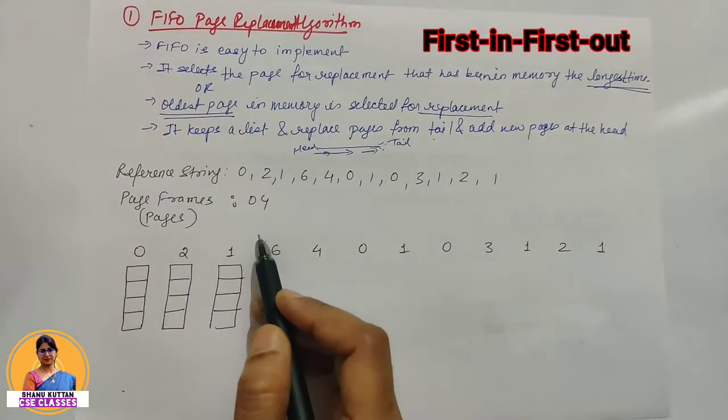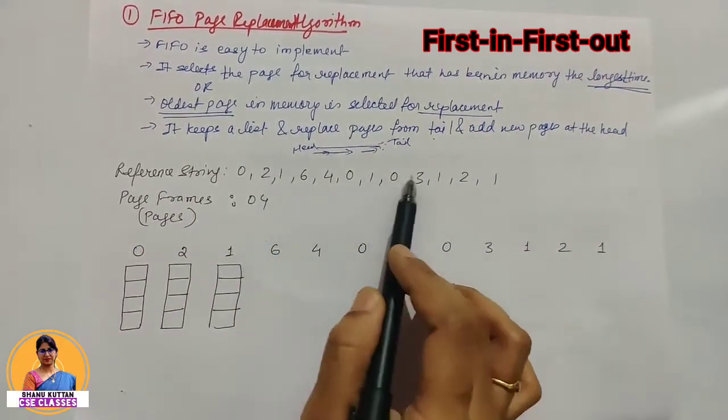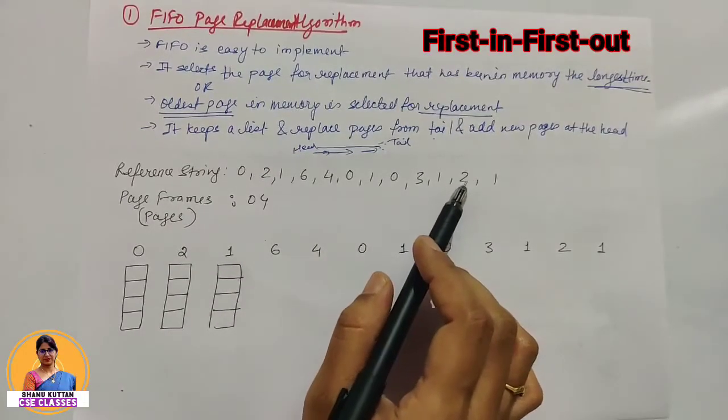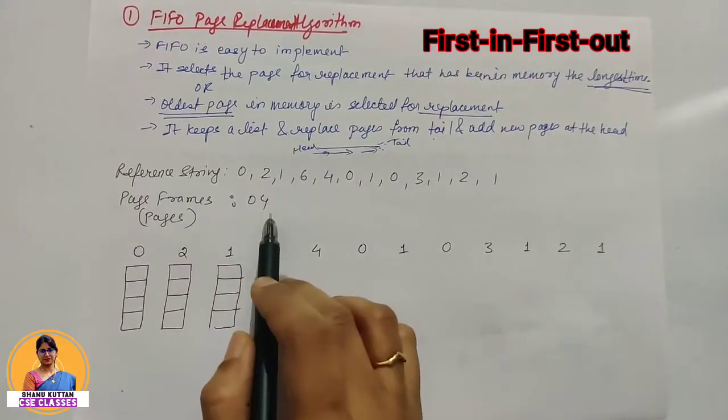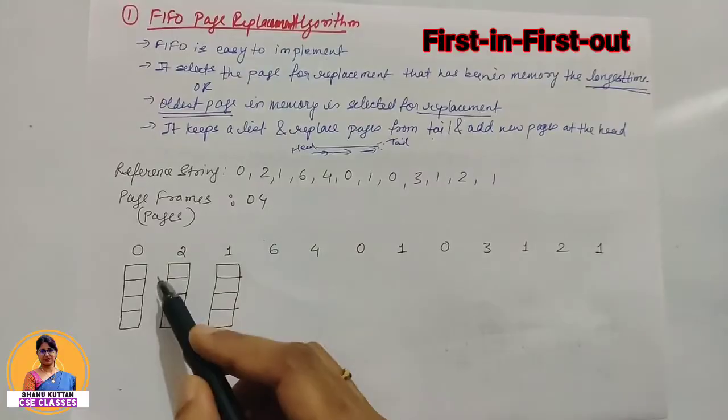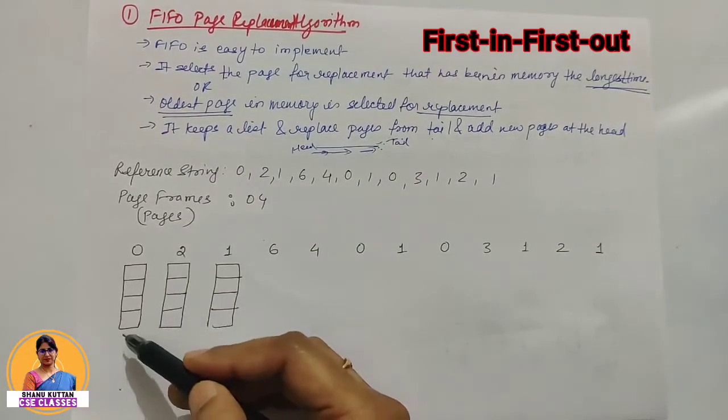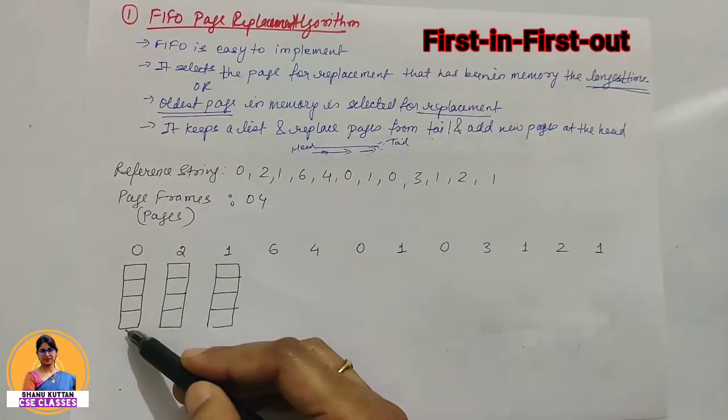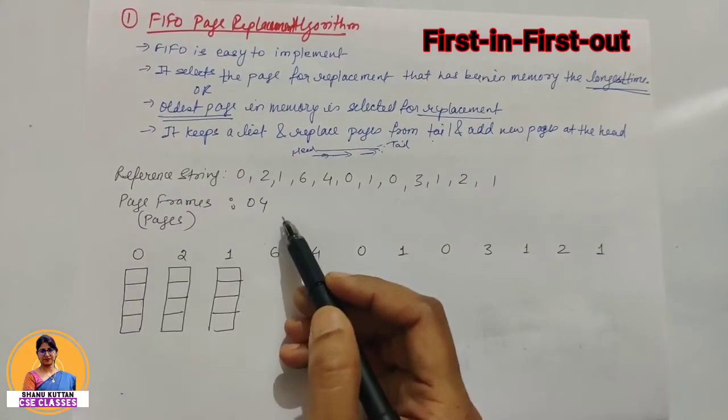Let's take a look at this example. Suppose this is a reference string where pages have been given. Page frames is 4, meaning at a time in main memory or cache memory there are 4 pages stored together. So this is page frame size which is 4.